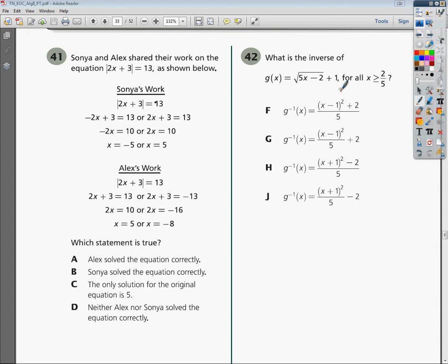Well, if C says that the only solution for the original equation is 5, and D says that neither Alex nor Sonia got the equation correct, wouldn't that be indicative of the same basic idea?